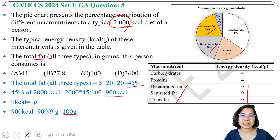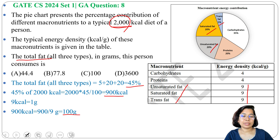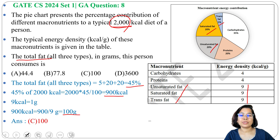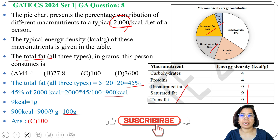So 900 kilocalories divided by 9 equals 100 grams. That person is taking 100 grams of fat every day to get 900 kilocalories, and that 100 grams contains trans fat, saturated fat, and unsaturated fat. So the answer is Option C: 100. That person consumes 100 grams of fat in this 2000 kilocalorie diet.